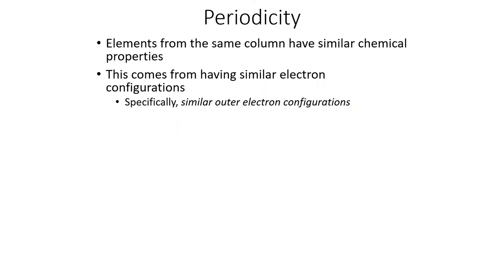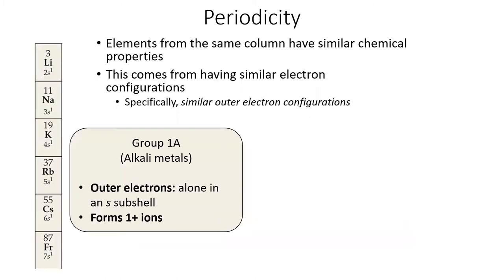These electron configurations also explain the periodicity of the table, because elements from the same column, the same family, have similar electron configurations. For example, the alkali metals all have a single electron in their outer S subshell. These metals all like to lose that electron and form 1 plus ions.